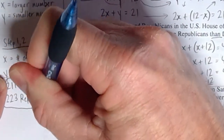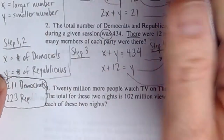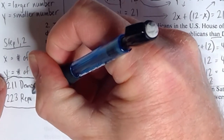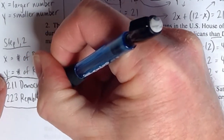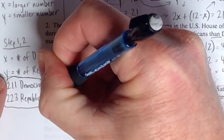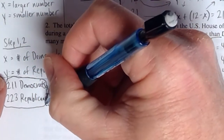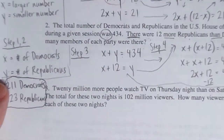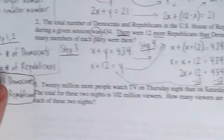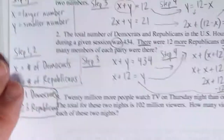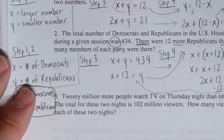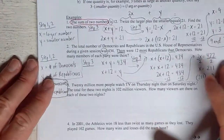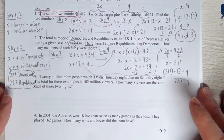Then plugging X = 211 back in: Y = 211 + 12 = 223. The final answer: 211 Democrats and 223 Republicans. Democrats and Republicans are units of measurement here because '211' alone could mean anything — 211 yards, 211 inches. Saying '211 Democrats' tells you exactly what it means.